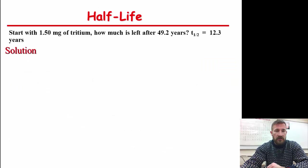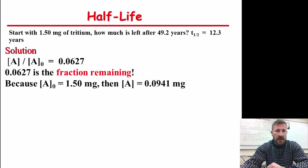So here's another way to do it if you have 0.15 milligrams of tritium. And the fraction remaining is this because if we start with 1.5 milligrams, then at A₀, it's going to be 0.0941 milligrams.